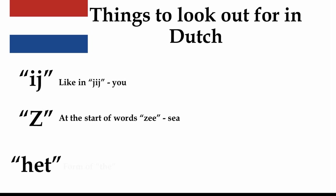And finally, we have 'het', which is a form of 'the'. Both in Frisian and Afrikaans, they have different words for 'het'. The other word in Dutch for 'the' is 'de', but these are both used in Afrikaans and Frisian, which is why I haven't included it here. Remember this, because you will be tested on this at the end.